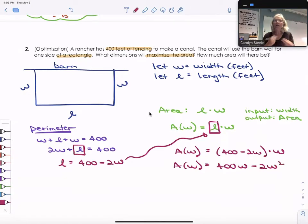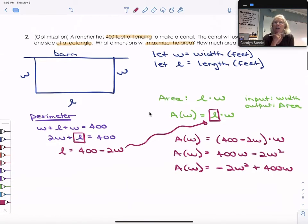I'm going to distribute 400w minus 2w squared. And I'm just going to write that so my a is going to match ax squared plus bx plus c. So my area is equal to negative 2w squared plus 400w.